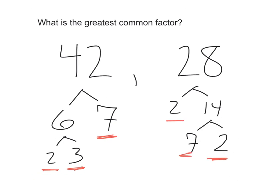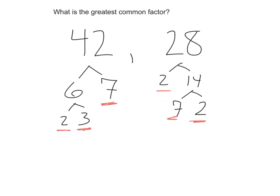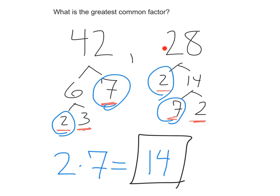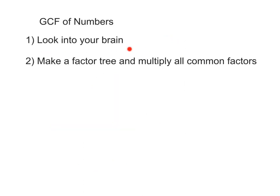Now we compare the prime factors of 42 and 28 to see what lines up. I see that they have a 2 in common, so I'll store that 2. They also have a 7 in common, so I multiply that times my 2. There's a 3 left over from 42 and a 2 left over from 28, but since those aren't in common, they're not part of the greatest common factor. So 2 times 7 gives me 14, and that's the greatest common factor. To summarize: first, look into your brain — that's the fastest way. If you can just see the answer, go with it. If not, make a factor tree and multiply all your common prime factors together.